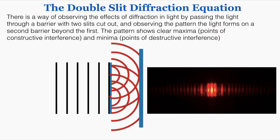There's a specific way of observing the effects of diffraction in light by passing the light through a barrier with two slits cut out and observing the pattern the light forms on a second barrier beyond the first. The pattern shows clear maxima, which are points of constructive interference, and minima, which are points of destructive interference.